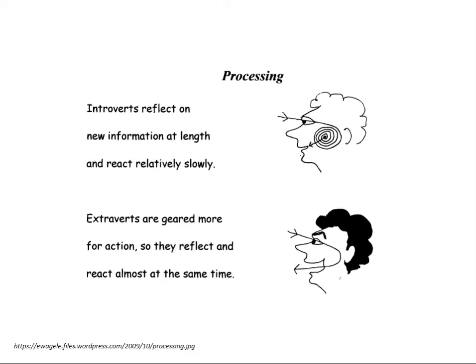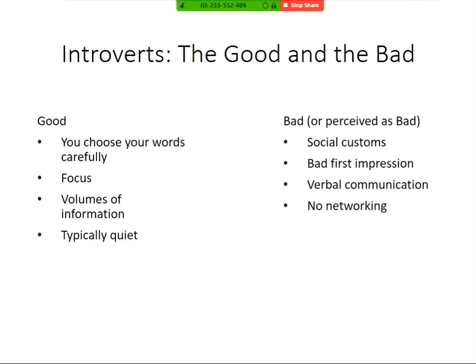For introverts: the good — you choose your words carefully because you've put a lot of thought into what you're going to say, you can focus on tasks, you have volumes of information inside your head, and you're typically quiet. The perceived bad: social customs can be awkward — you might be found in the corner of a room on your mobile phone. Potentially a bad first impression, less verbal expressiveness, and little or no networking. For extroverts: the good — they promote fast growth and development, are always seeking new ideas and opportunities, are socially active and expressive. The perceived bad: they can be offensive or unknowingly annoying, may have less self-awareness, and can be impulsive in their behaviour.